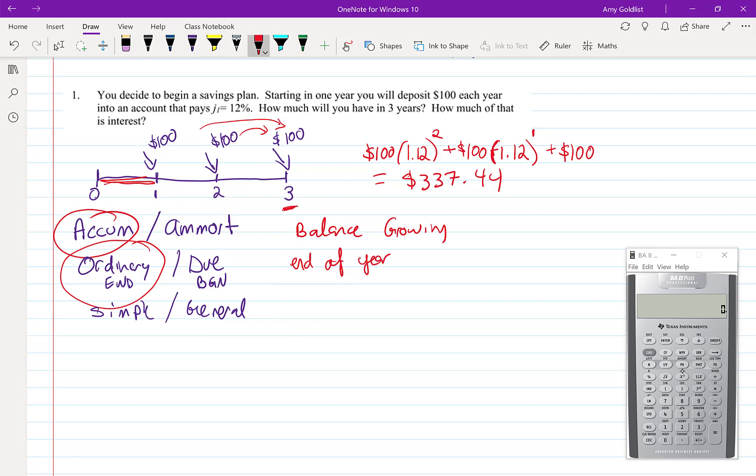Simple and general. Well, my payments, I put in a payment every year. And my compounding period, it compounds annually. J1 equals 12%. So those things are the same. That makes this a simple, ordinary annuity.